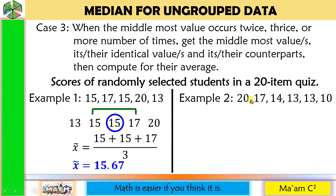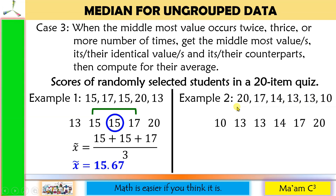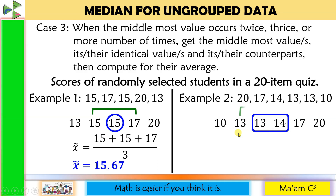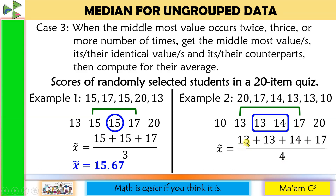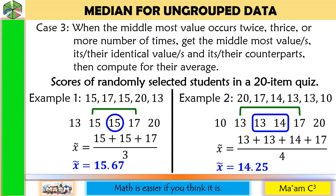Case 3, example 2 with 6 observations (even): arranged as 10, 13, 13, 14, 17, 20. The two middle values are 13 and 14. But 13 also appears as an identical value, and its counterpart is 17. So we consider four numbers: 13, 13, 14, 17. We add them and divide by 4: (13 plus 13 plus 14 plus 17) divided by 4 gives us 14.25. Note that case 3 is not commonly used — check with your teacher whether to apply case 3 or just cases 1 and 2.